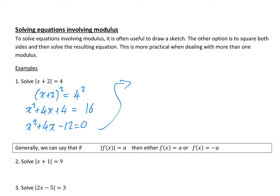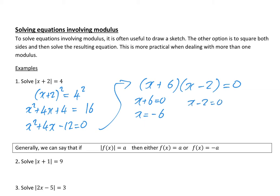This factorizes using the sum and product method to give x plus 6 times x minus 2 equals 0. So either x plus 6 equals 0, meaning x equals minus 6, or x minus 2 equals 0, meaning x equals 2.